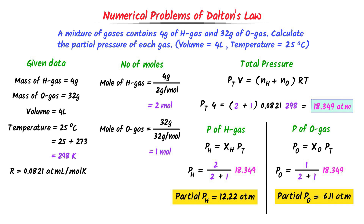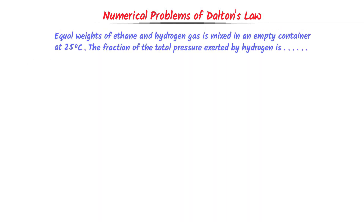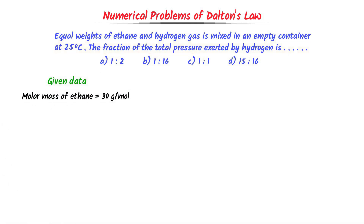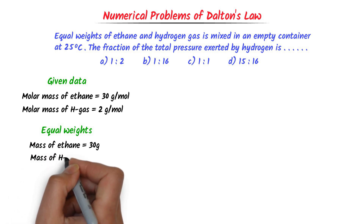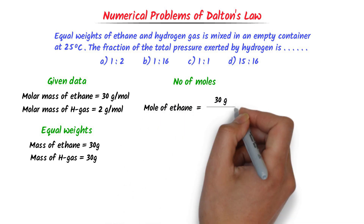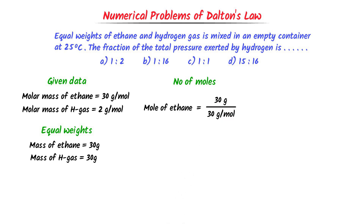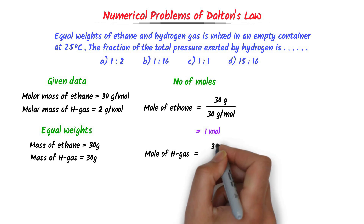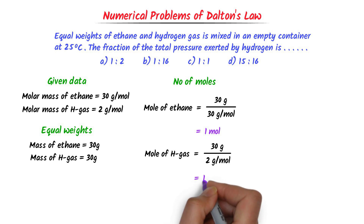Lastly, let me teach you an important MCQ from the competitive exam of IIT. Equal weights of ethane and hydrogen gas are mixed in an empty container at 25°C. The fraction of the total pressure exerted by hydrogen is — ? The molar mass of ethane is 30 g/mol and the molar mass of hydrogen gas is 2 g/mol. Since we are told to take equal weights of both gases, I take 30 g of ethane and 30 g of hydrogen gas. The number of moles of ethane = 30 g / 30 g per mole = 1 mole. The number of moles of hydrogen gas = 30 g / 2 g per mole = 15 moles.